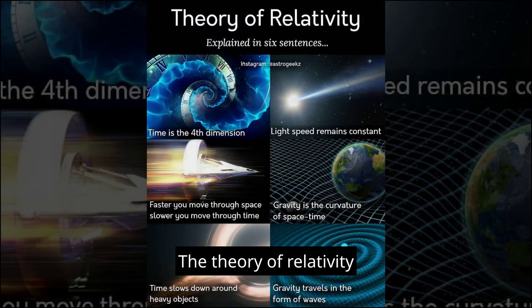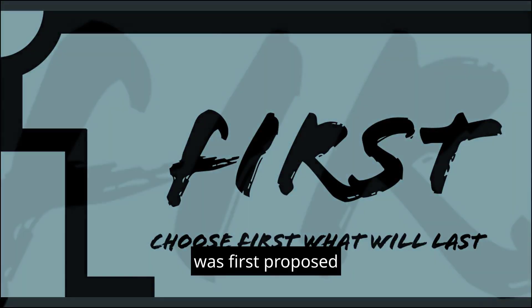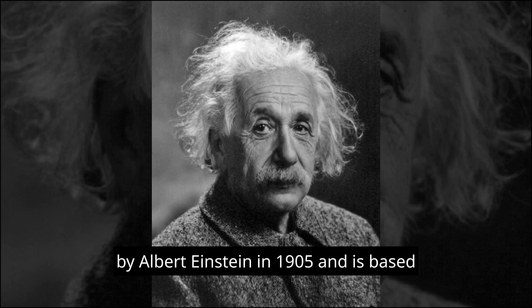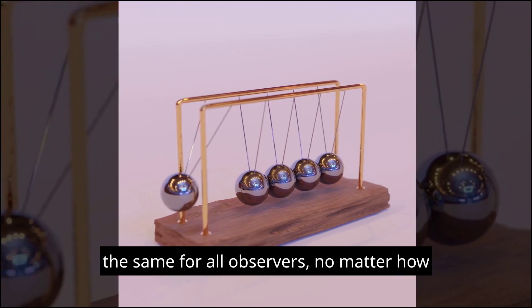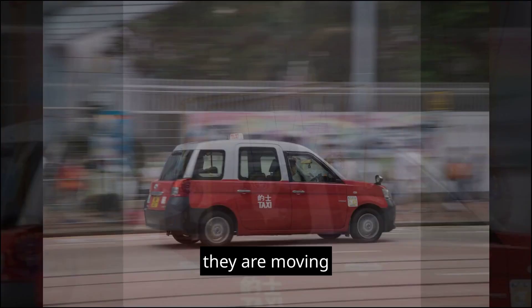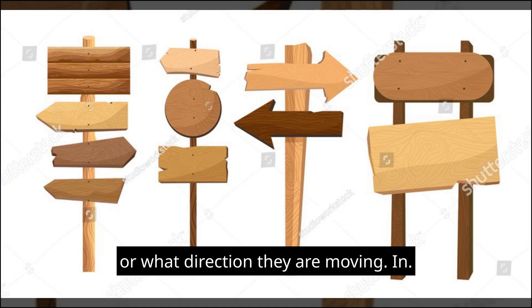The theory of relativity was first proposed by Albert Einstein in 1905 and is based on the idea that the laws of physics should be the same for all observers, no matter how fast they are moving or what direction they are moving in.